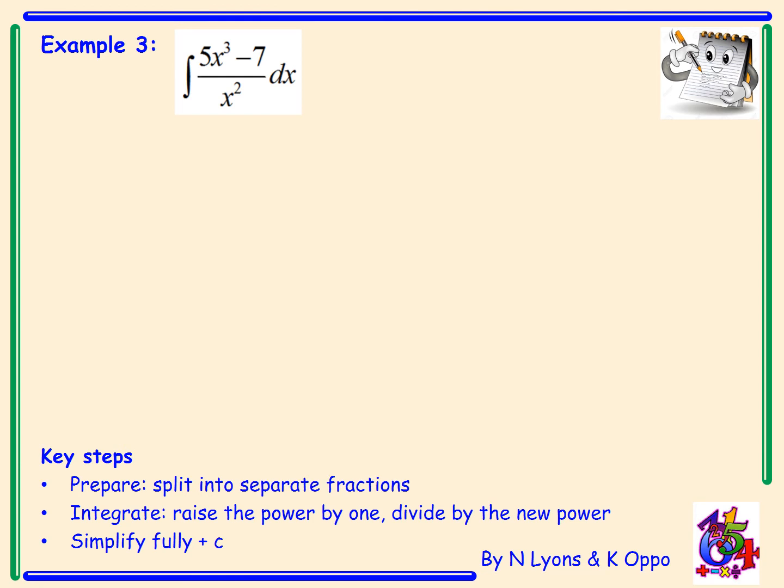So let's have a go at that then. To prepare I've got the integral of 5x cubed divided by x squared minus 7 over x squared with respect to x. Now that equals if I simplify it the integral of 5x minus 7x to the power minus 2 with respect to x. Now that's so much simpler to integrate.